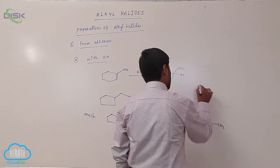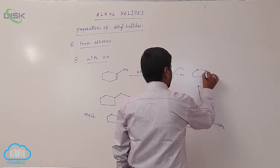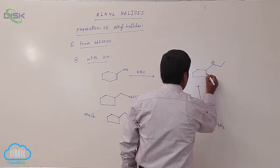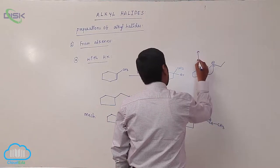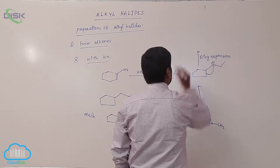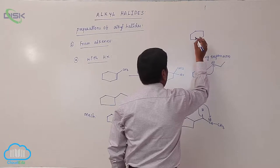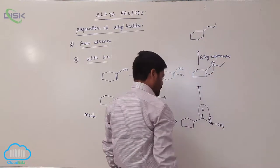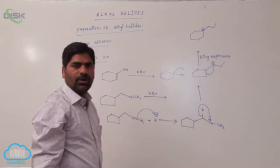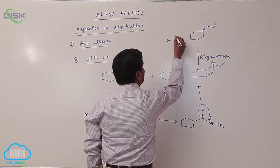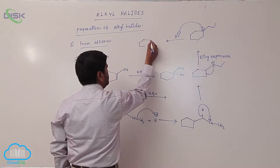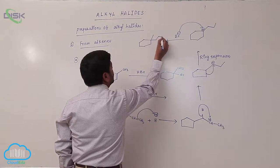Now due to this, it forms a carbocation. Ring expansion takes place here — which gives a larger member ring. The ring carries a positive charge, so ring stability increases as well as carbocation stability increases. Therefore Br⁻ is added to this, to form the product with Br.